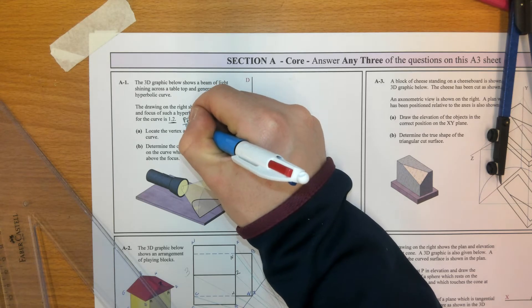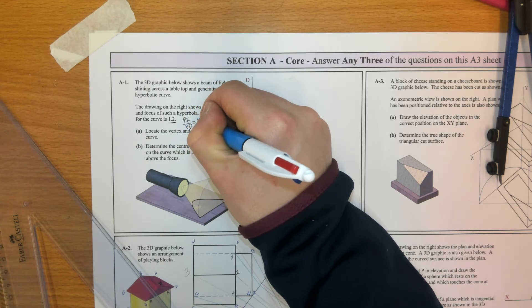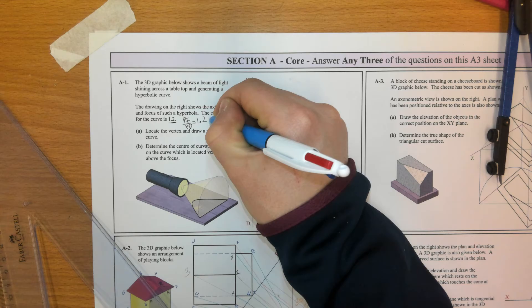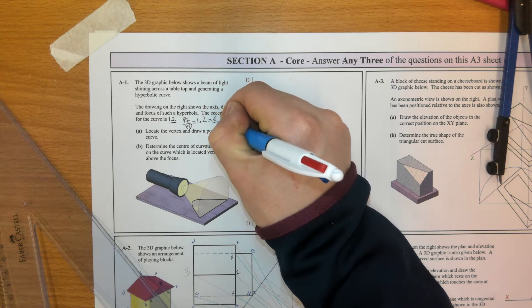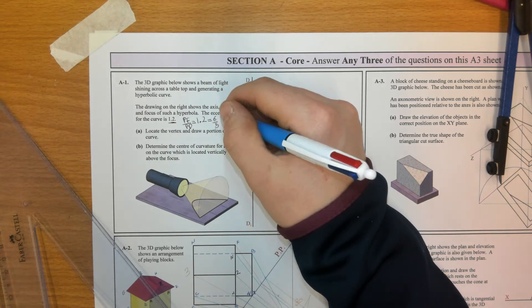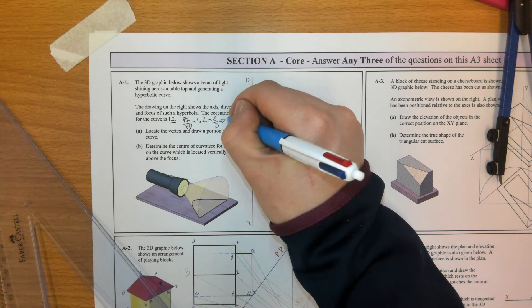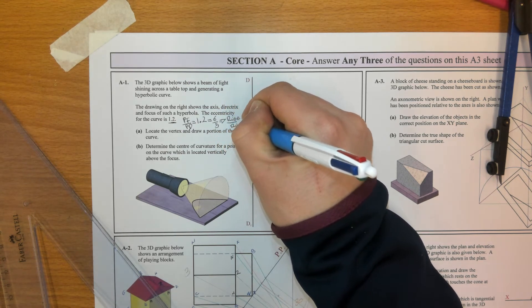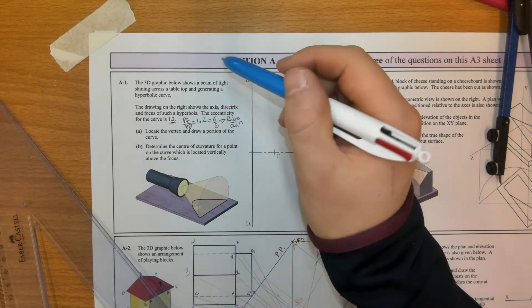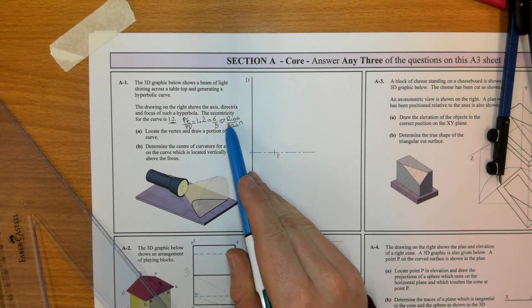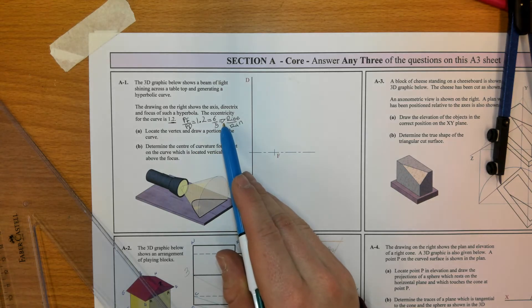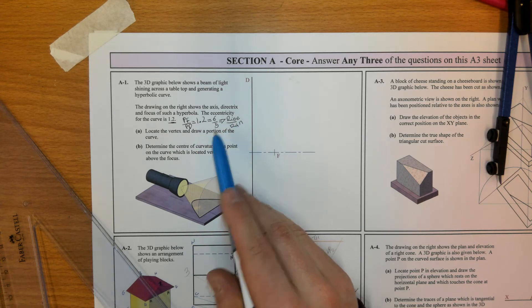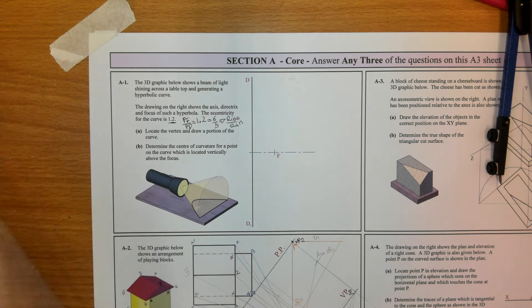So PF over PD equals 1.2, and that as a fraction is 6 over 5. That's very important. PF over PD is like the rise over the run, slope of the line. Locate the vertex and draw a portion of the curve. The line of eccentricity is going to rise 6 units and run 5 units.